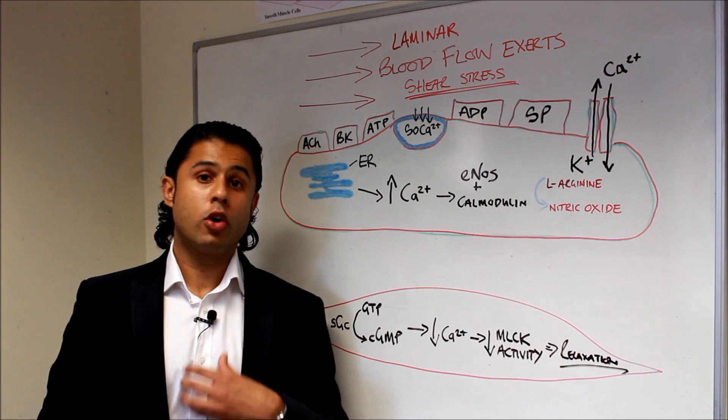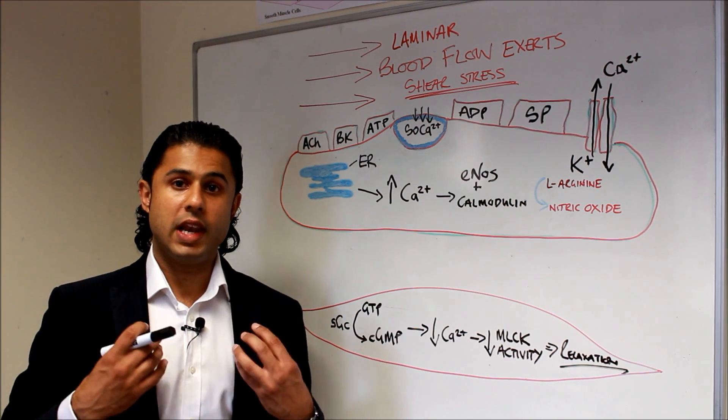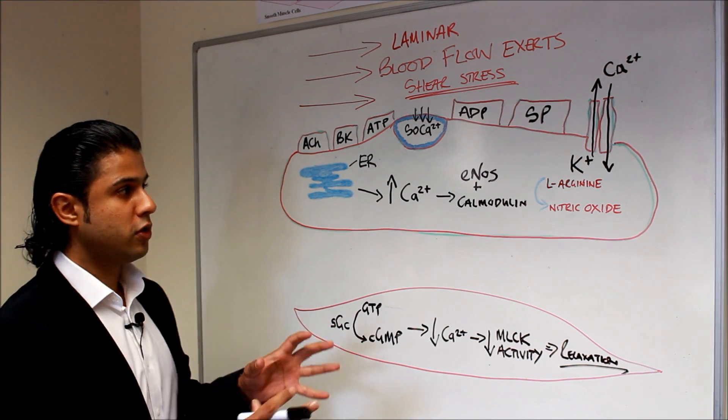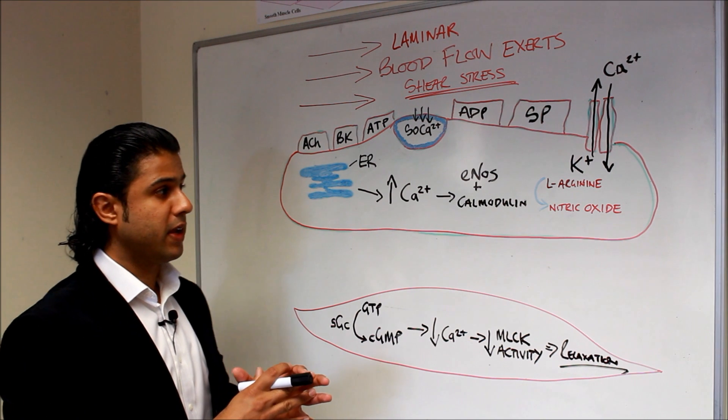So if we think about our coronary arteries, they've obviously got to dilate to increase blood flow to the myocardium. Now what we're going to do is look at the cellular process in terms of what's happening.